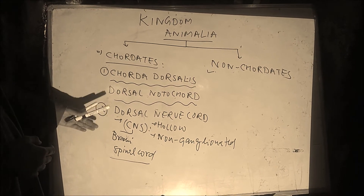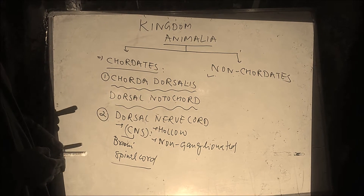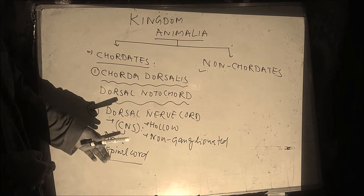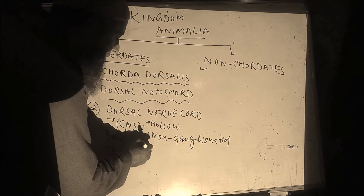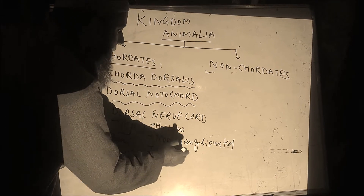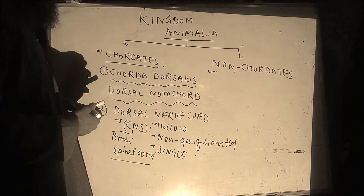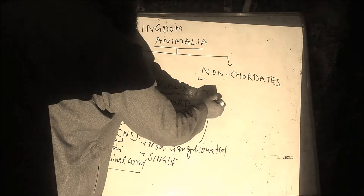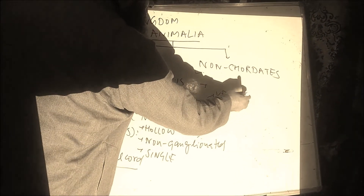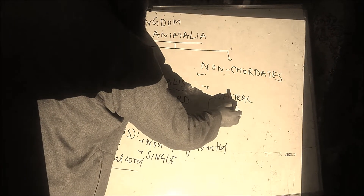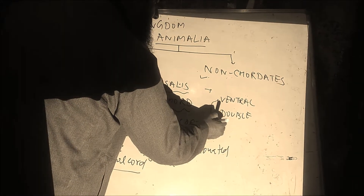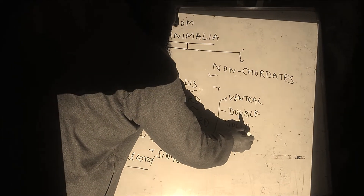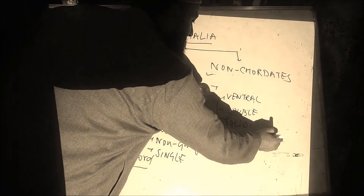These two structures — Brain and Spinal Cord — make the Central Nervous System. In Chordates, the nerve cord is dorsally present, hollow, non-ganglionated, and single. Whereas in Non-Chordates, a nerve cord is present but it is ventral, double, solid, and ganglionated.